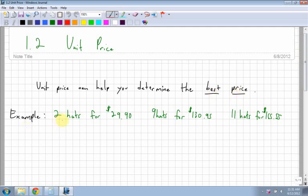So for example, if I have 2 hats for $29.90, if I have 9 hats for $130.95, or if I have 11 hats for $165.55, I'm trying to figure out what the best price is. So here's how I set this up.